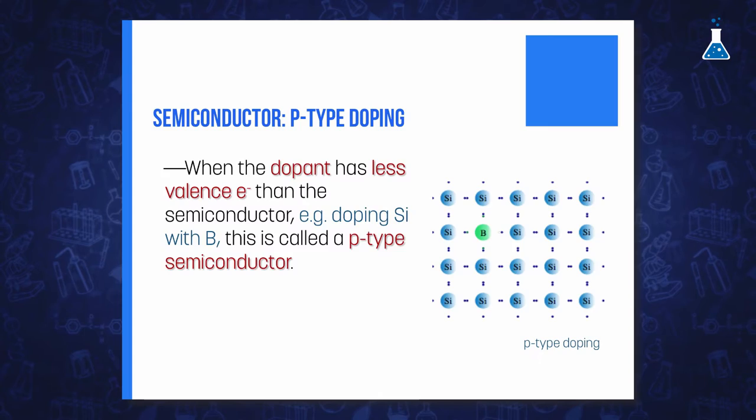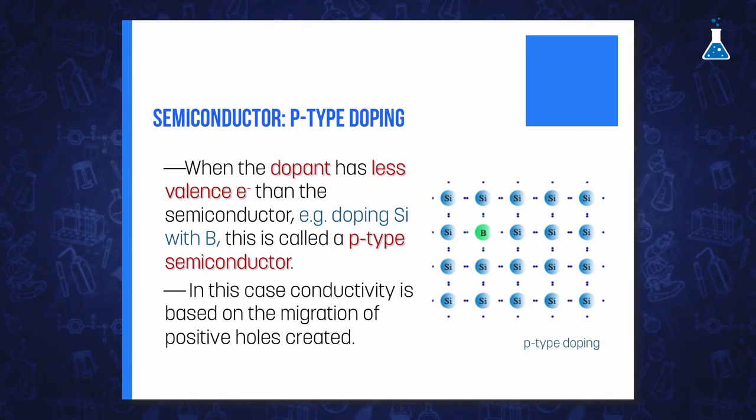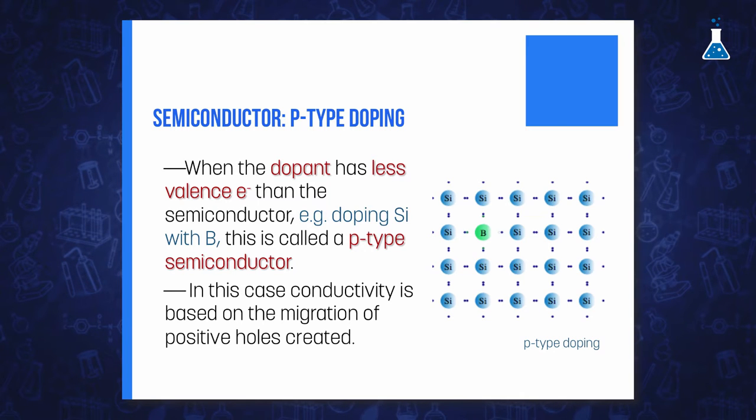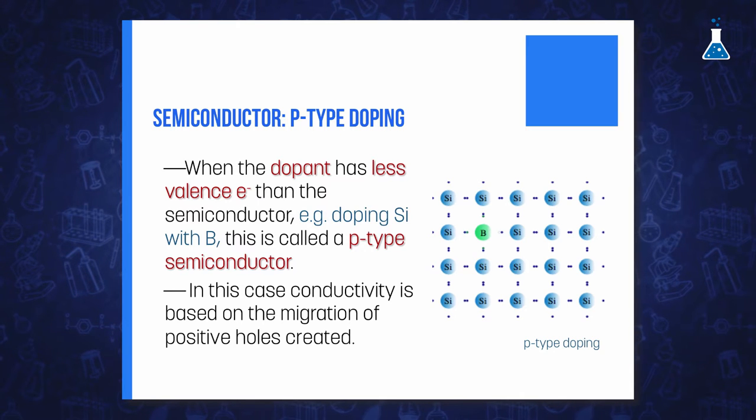On the other hand, silicon can be doped with boron, which has three valence electrons. The boron atom is named an acceptor atom because it may accept electrons from the valence band, and positive holes are created. In this case, conductivity is based on the migration of positive holes, and therefore this type of silicon is named a P-type conductor.